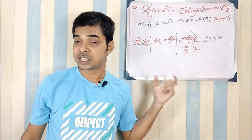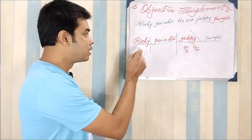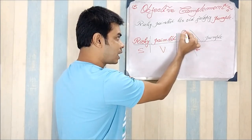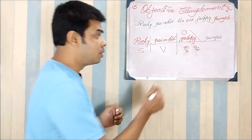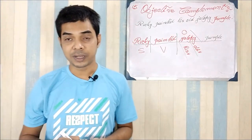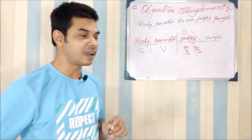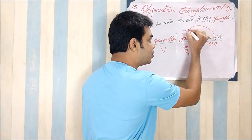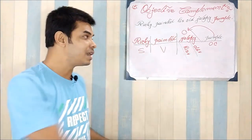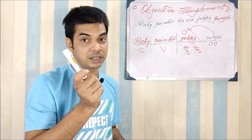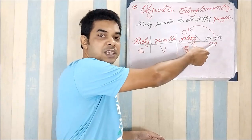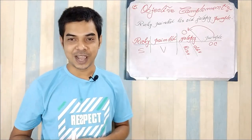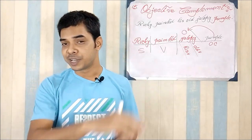'Ricky' is the subject, 'painted' is the verb, and 'jalopy' is the object, which has two adjectives — 'his' and 'old' — placed as already learned. For 'purple' the objective complement, since it relates to the object and not the subject, we place a slash after the object and then add 'purple'. This completes the logical sentence diagram for objective complement.